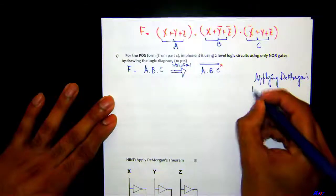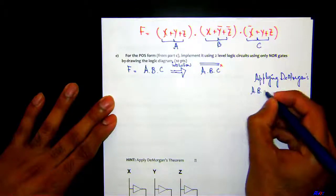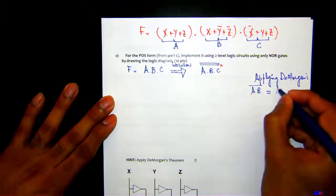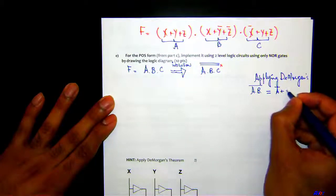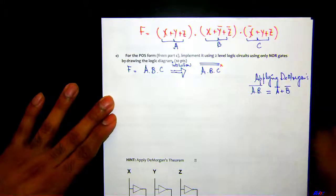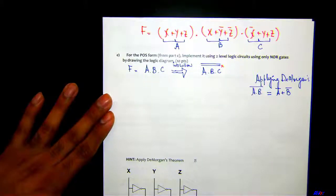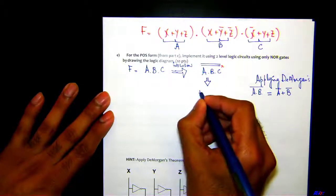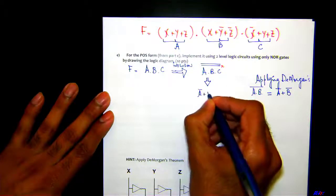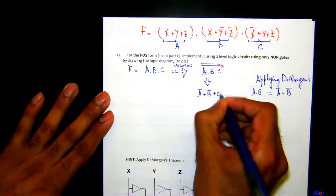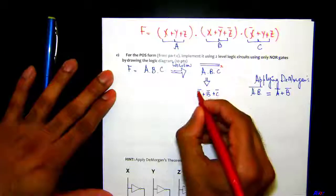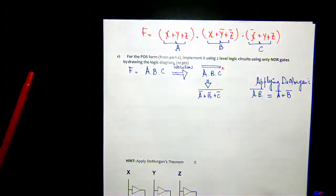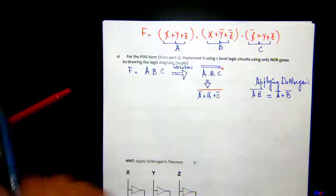And we know that A̅·B̅ with a bar on the whole thing is equivalent to A̅+B̅. That's DeMorgan's theorem, correct? Right, okay. So I can write down this equation as A̅+B̅+C̅, and then the top bar which is on the whole thing.